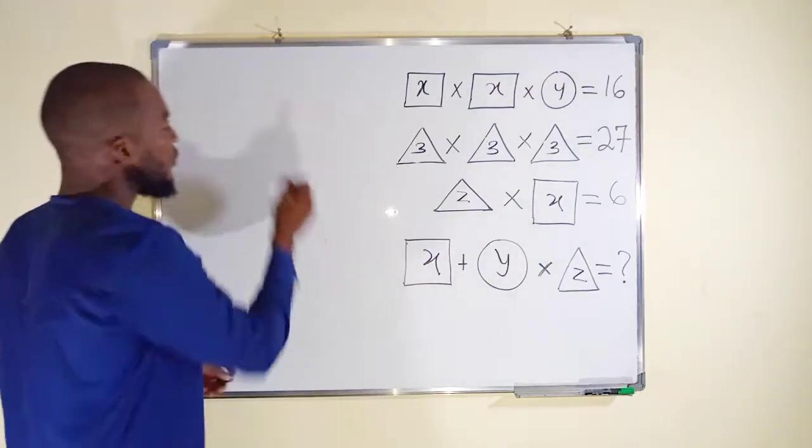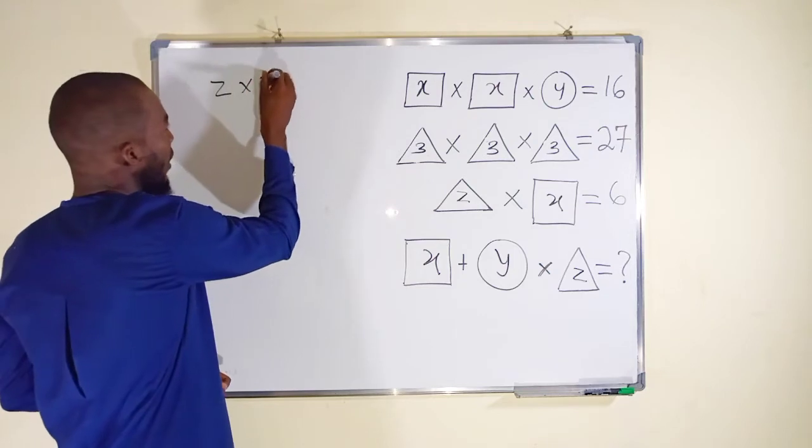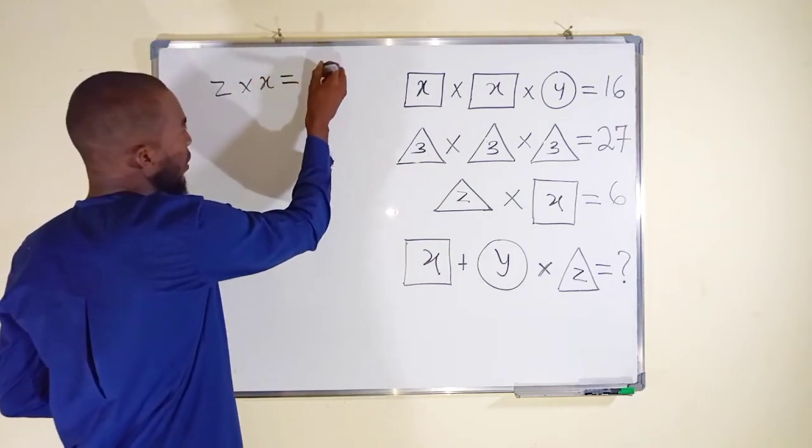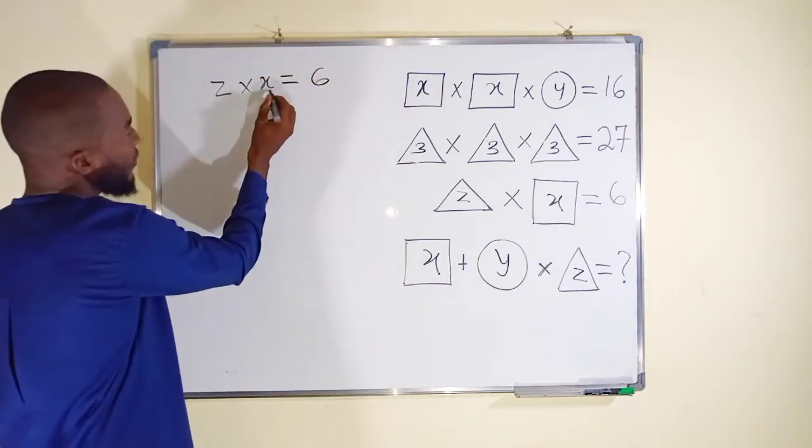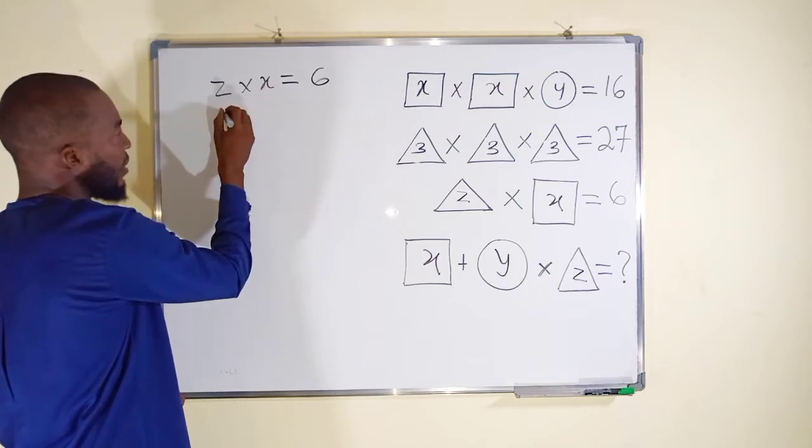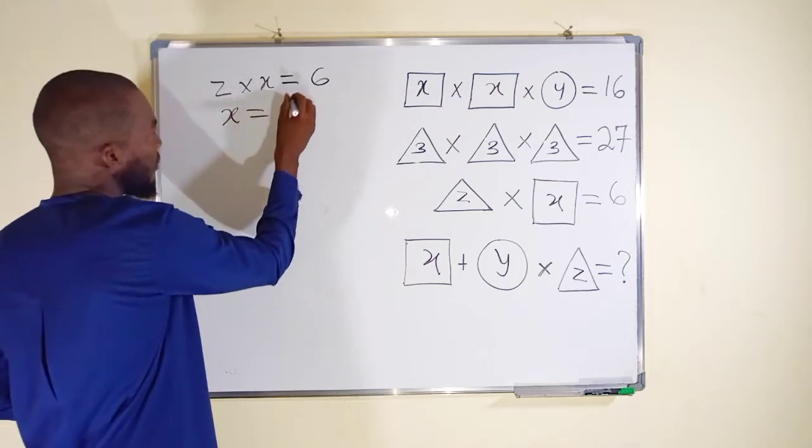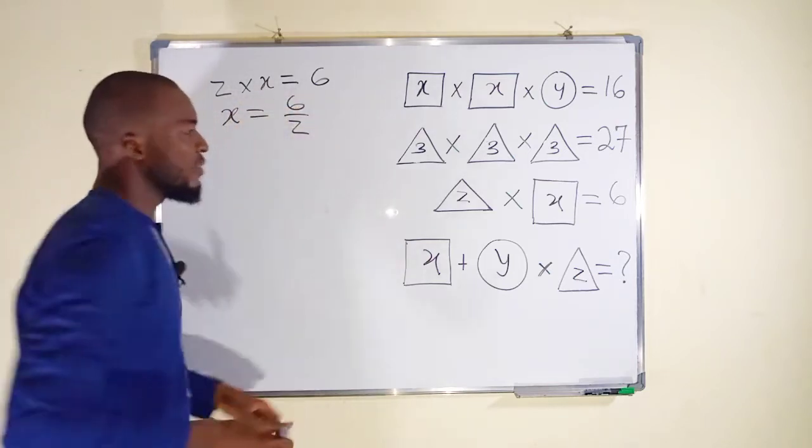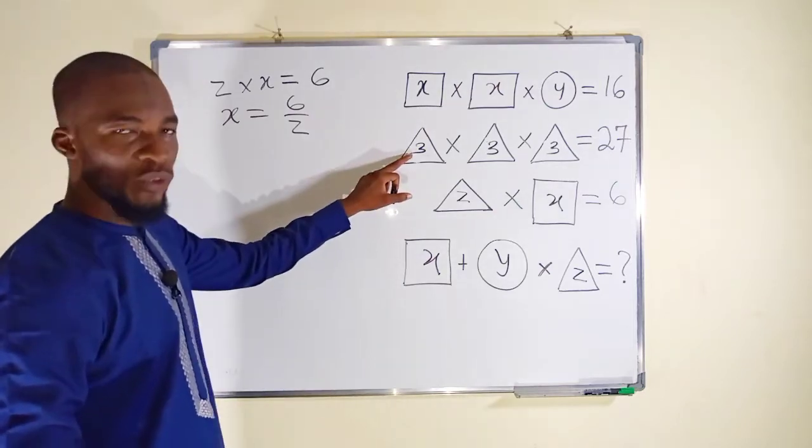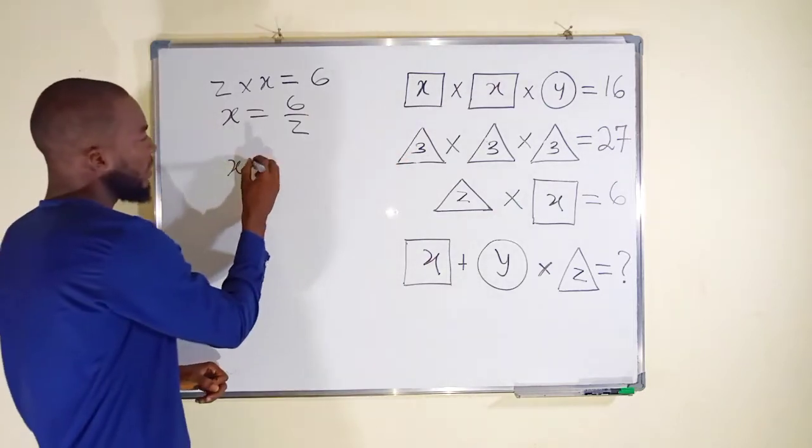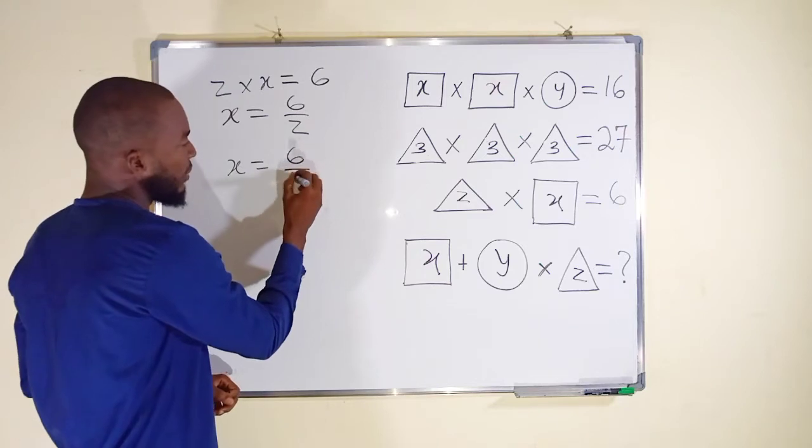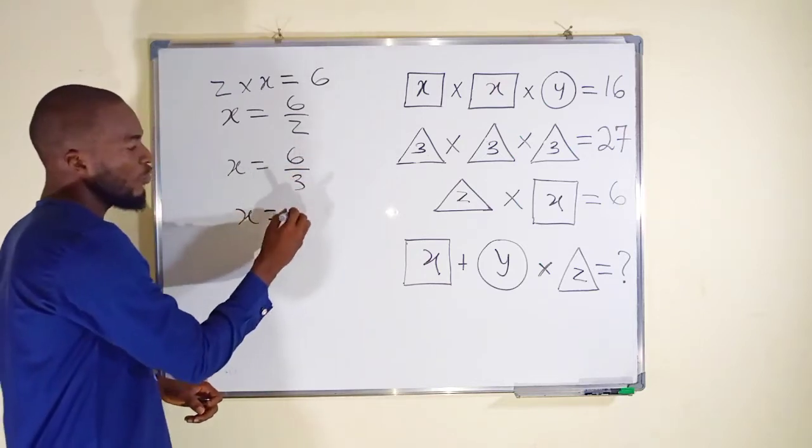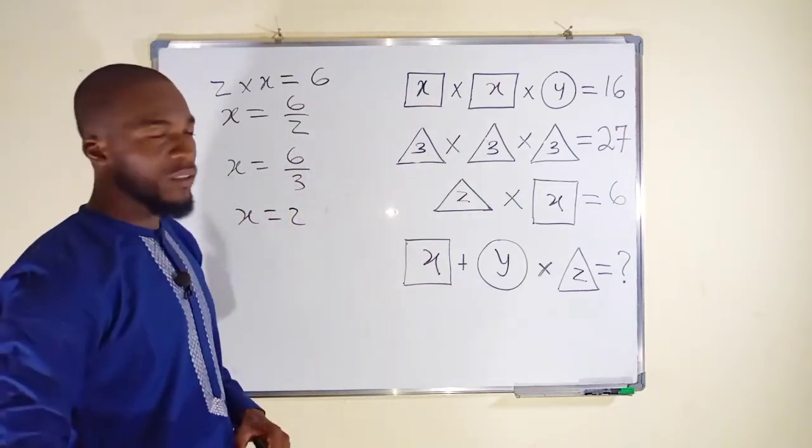From the third equation we have z multiplied by x is equal to 6. If you want to find the value of x you can divide both sides by z, so that x equals 6 divided by z. But z has been found to be equal to 3, so x is equal to 6 divided by 3, and x is equal to 2 because 6 divided by 3 is equal to 2.